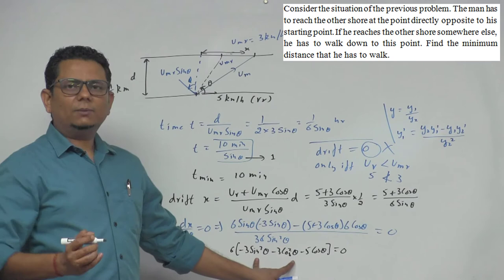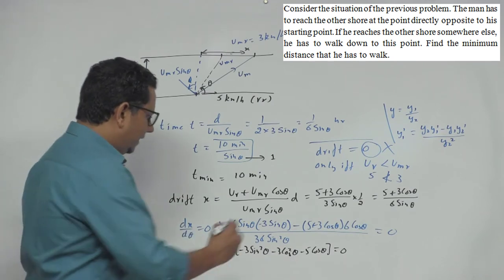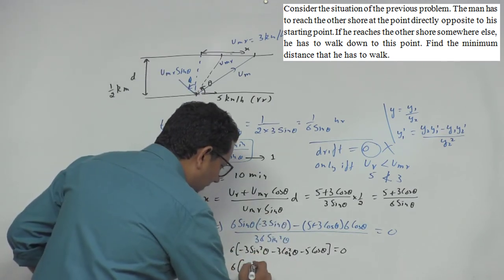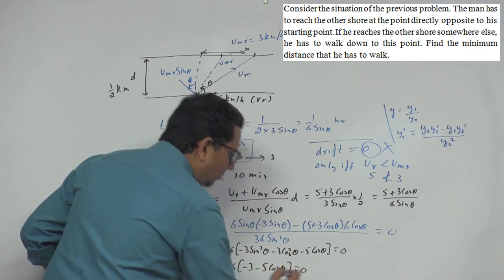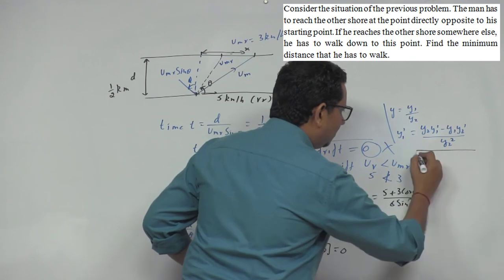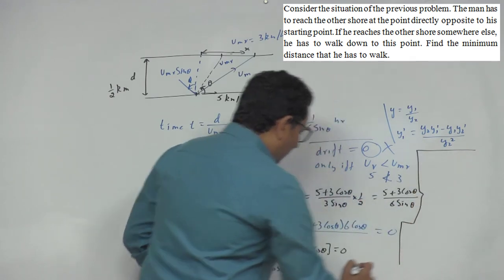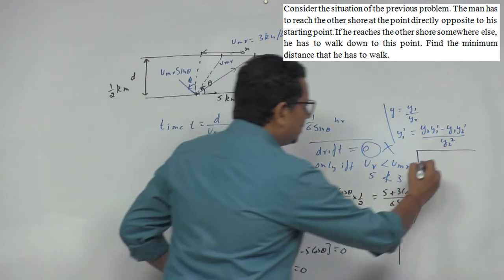Now sin square theta plus cos square theta equals 1. So what remains finally is 6 multiplied by minus 3 minus 5 cos theta equals 0. This means cos theta equals minus 3/5.